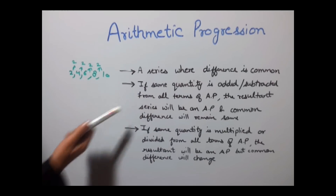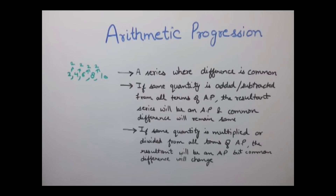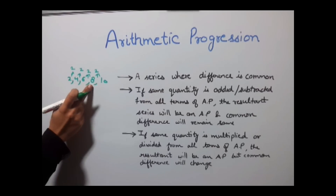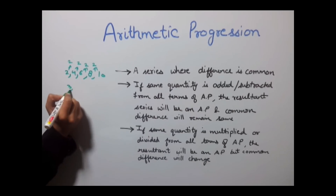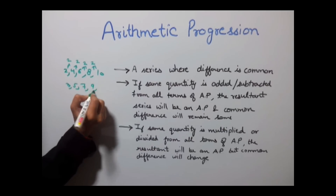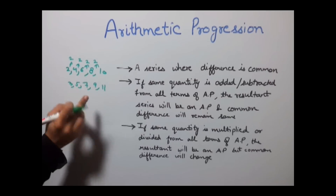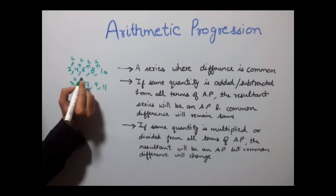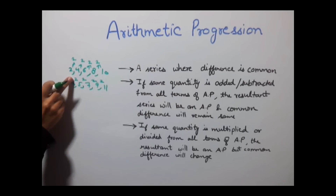If the same quantity is added or subtracted from all the numbers of an AP, the resultant series will also be an AP and the common difference will remain the same. For example, taking the series 2, 4, 6, 8, 10 and adding 1 to all numbers gives us 3, 5, 7, 9, and 11. This new series is also an AP with the same common difference of 2.